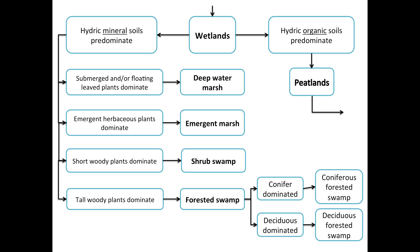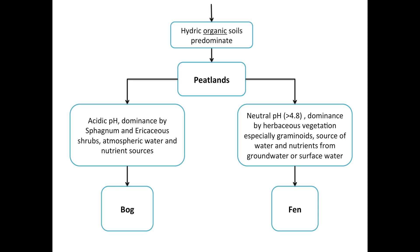If the answer is organic, the wetland is generally called a peatland. Peat is undecomposed organic matter and is deposited under wet, anoxic, acidic, and cold conditions. Within the general category of peatland, there are two kinds that are recognized: bogs and fens. Here's how to separate them.